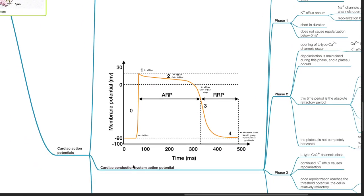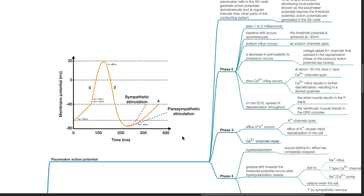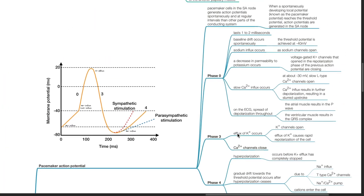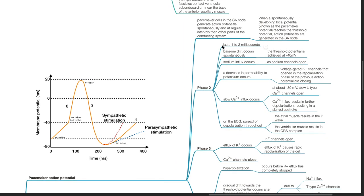Cardiac action potentials — the pacemaker action potential. Pacemaker cells in the SA node generate action potentials spontaneously and at regular intervals than other parts of the conducting system. When a spontaneously developing local potential known as the pacemaker potential reaches the threshold potential, action potentials are generated in the SA node.